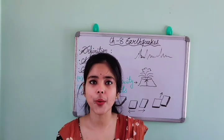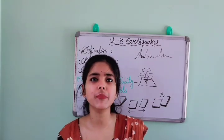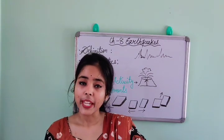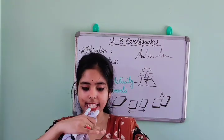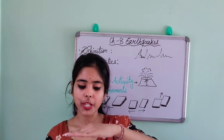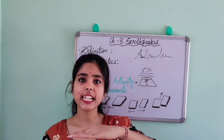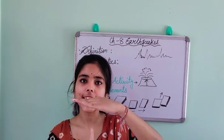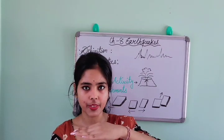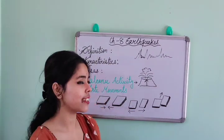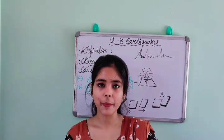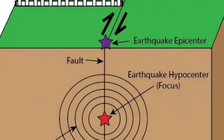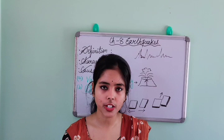Earthquake is a tremor — tremor means simple vibration — below the earth's crust. It is a tremor or vibration which will come and hit the earth's surface. So, this is basically earthquake: a tremor. First it will be in the interior part of the earth, and after that it will come and hit the earth's surface or earth crust.